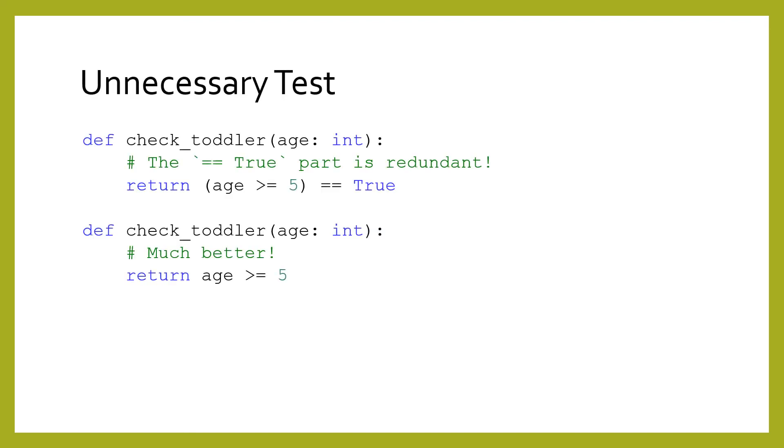A second common mistake is to test if a boolean expression is equal to true. Although the expression age greater than or equal to 5 equals equals true reads like it makes sense in English, it is redundant in Python. Age greater than 5 already evaluates to either true or false. If you compare a boolean value to true, then the result is the same boolean value. Nothing is accomplished, you have simply made your code more complex. It's just like adding 0 or multiplying by 1, or adding the empty string to a string. Literally nothing happens.